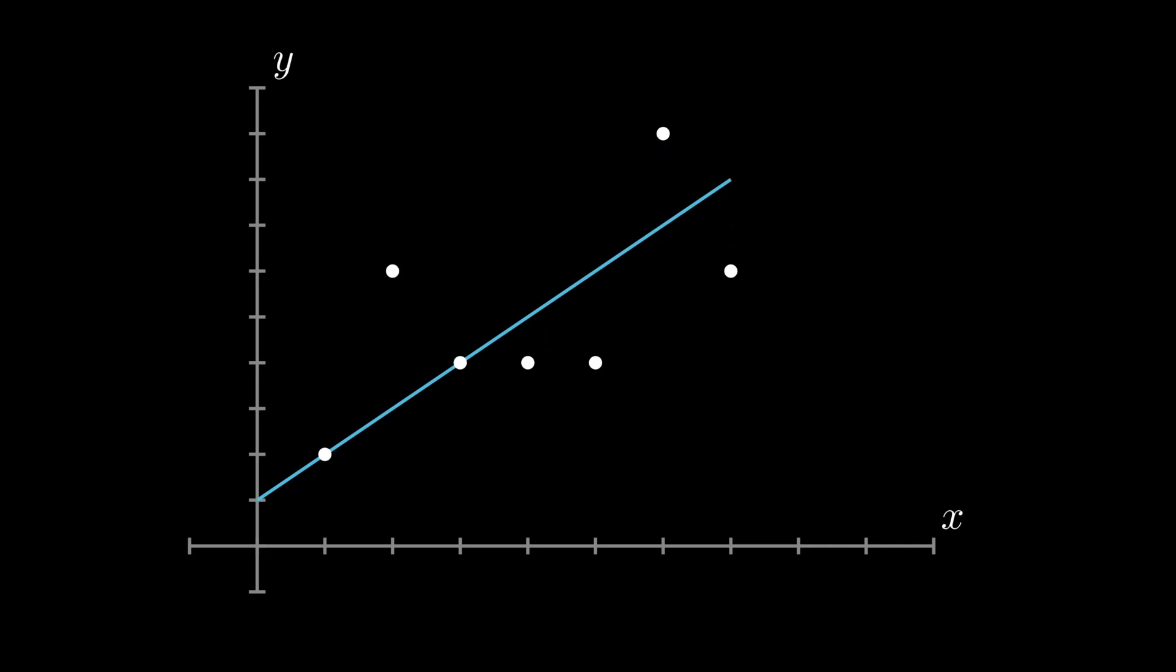To avoid this we do regularization. It is the first thing every machine learning developer will do to avoid overfitting. It is like penalizing or punishing our model for doing wrong. This is a new line formed after regularization. You can clearly see the new error is less than the error of the previous line.